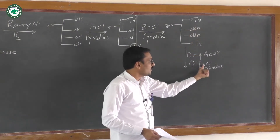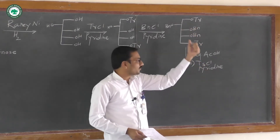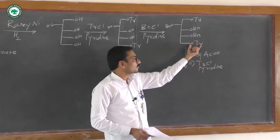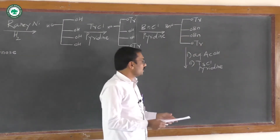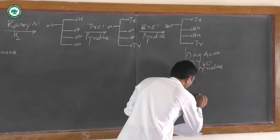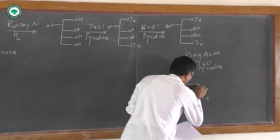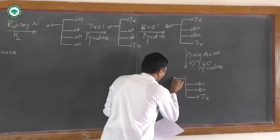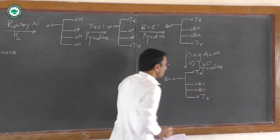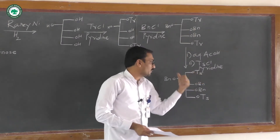In the next step, we use tosyl chloride in the presence of pyridine. The newly formed OH groups react with tosyl chloride and pyridine, giving the formation of OTs groups. The OTr group is thus converted into OTs, which is a good leaving group. This OTs-containing structure can be written in a simplified way.